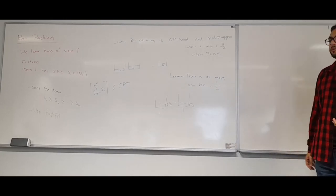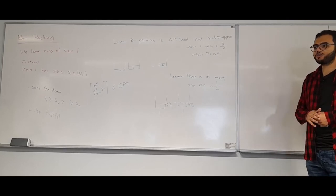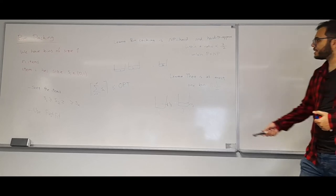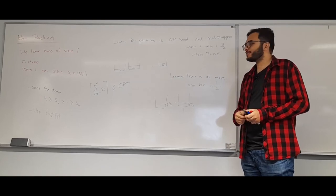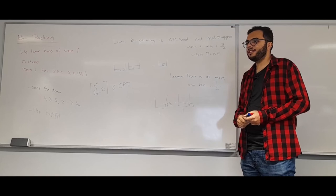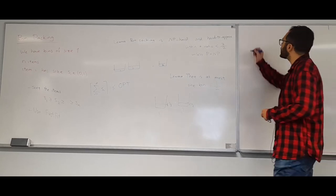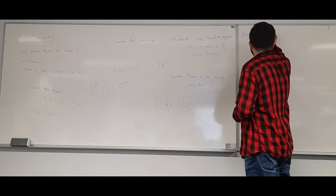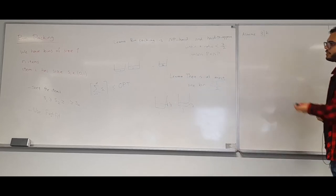I'm hoping that sorting and using first-fit gives a 3/2 approximation ratio. Let's analyze by considering K bins and assuming K is divisible by 3 for simplicity; all other cases are similar. Say K = 3K', so we have 3K' bins.